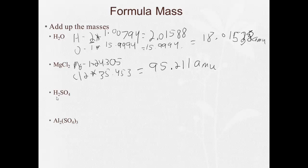H2SO4. Hydrogen is 2 times 1.00794. Sulfur is 1 of them, so it's 1 times 32.065. And this time it's 4 oxygen, so it's 4 times 15.9994.